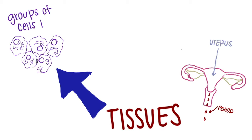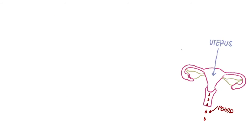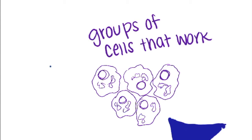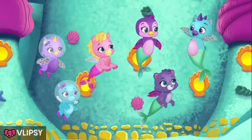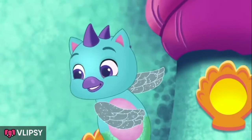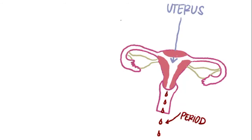You see, your bodily organs like your uterus are made up of tissues, and tissues are groups of cells that work together. In the uterus there are three different layers, and the inner layer is called the endometrium, which is released during your period.